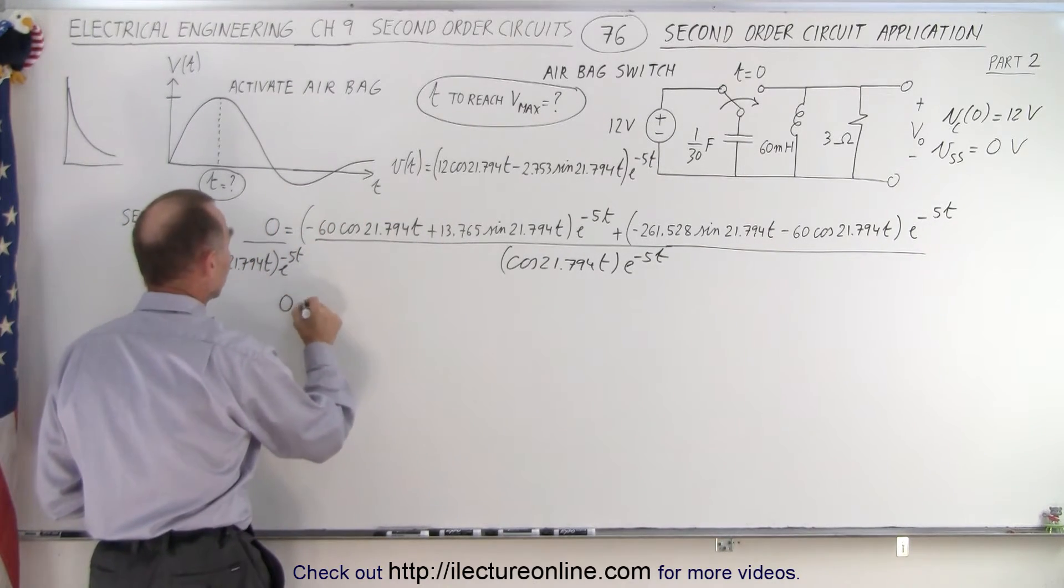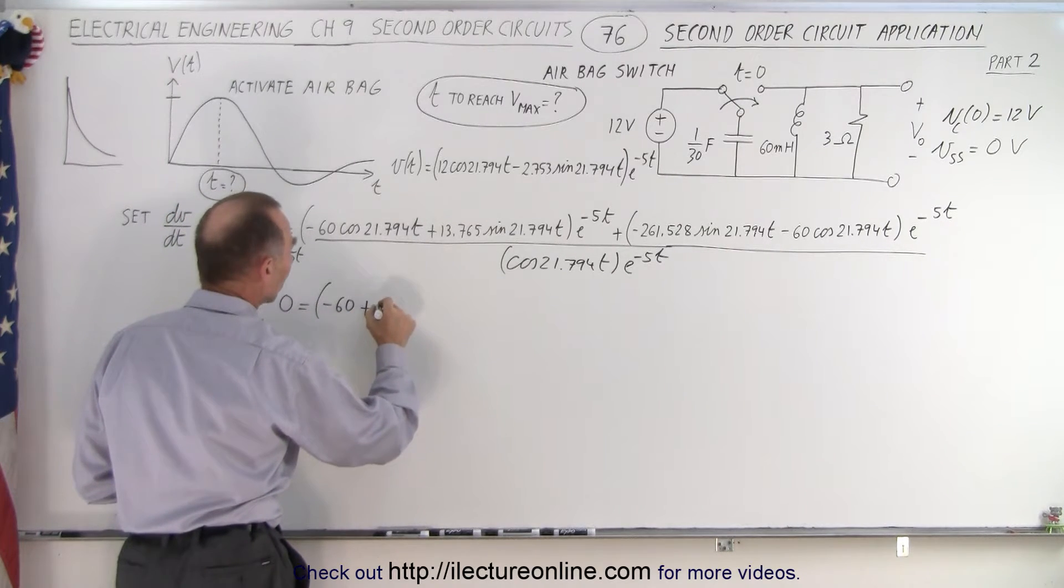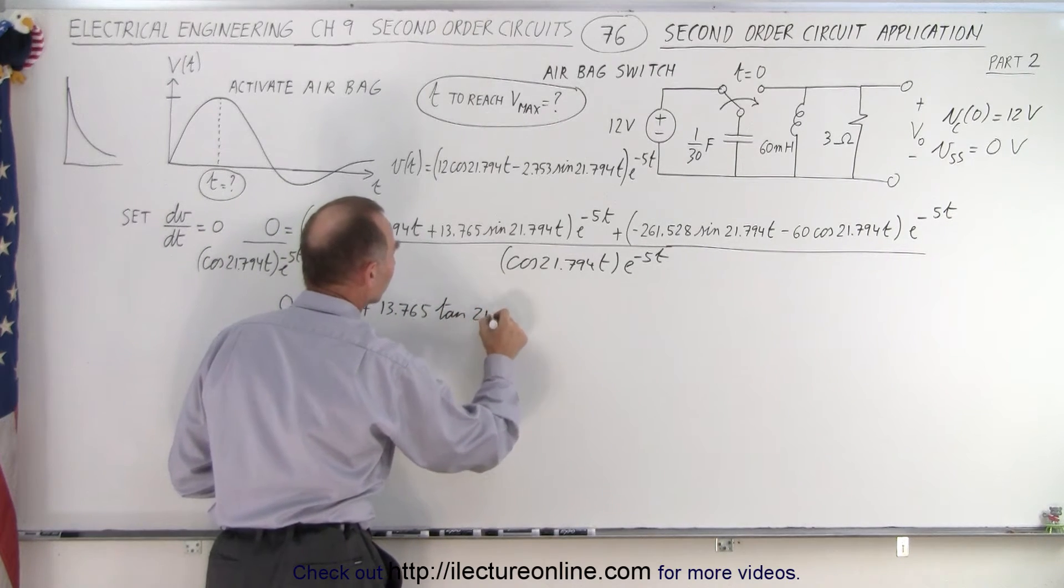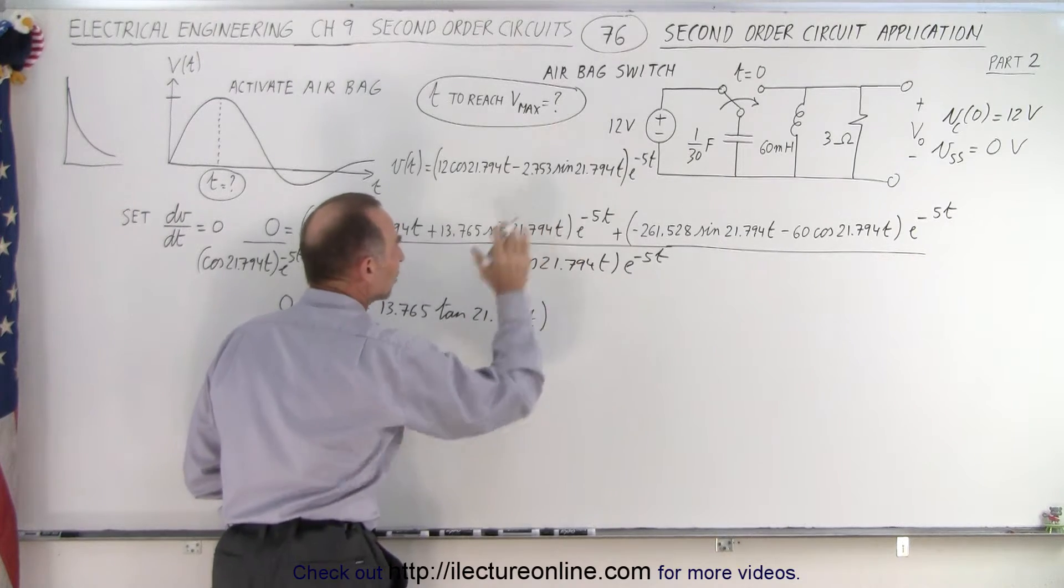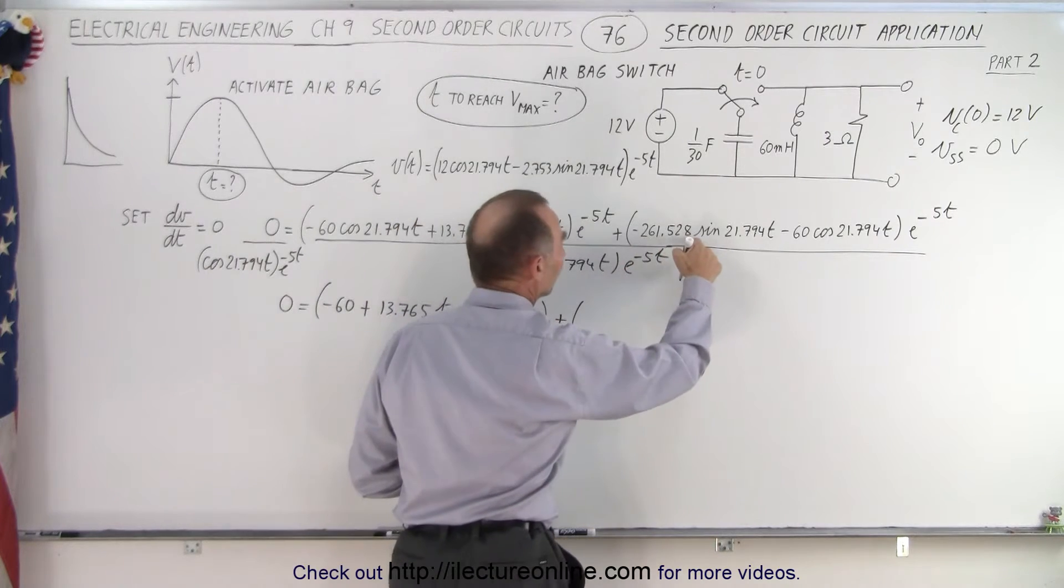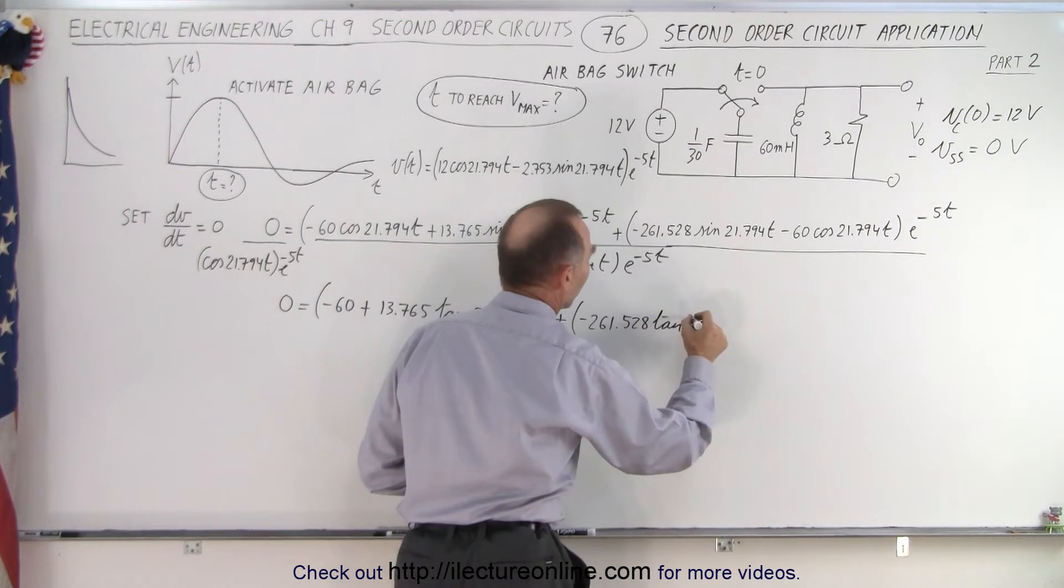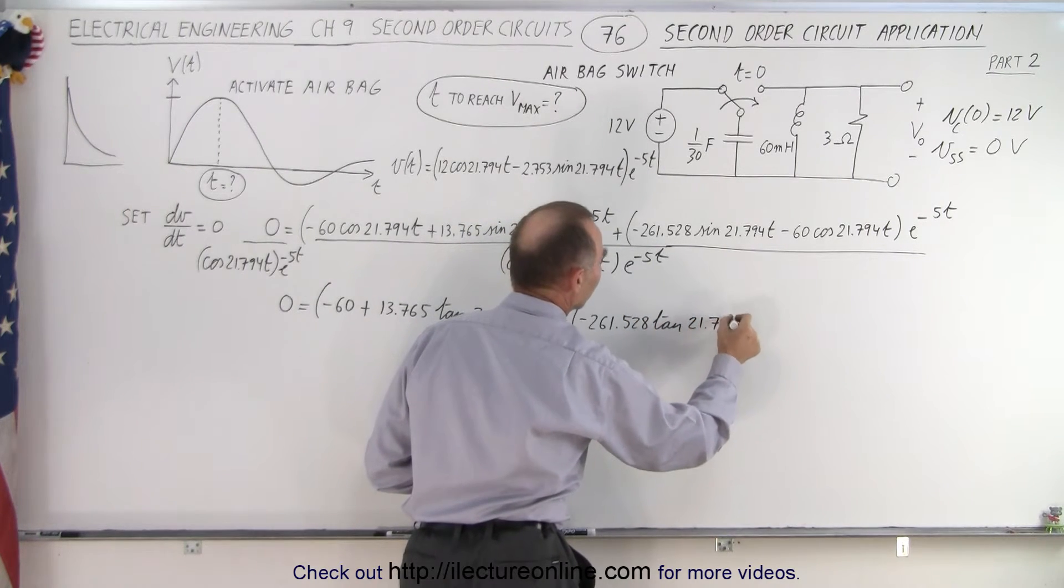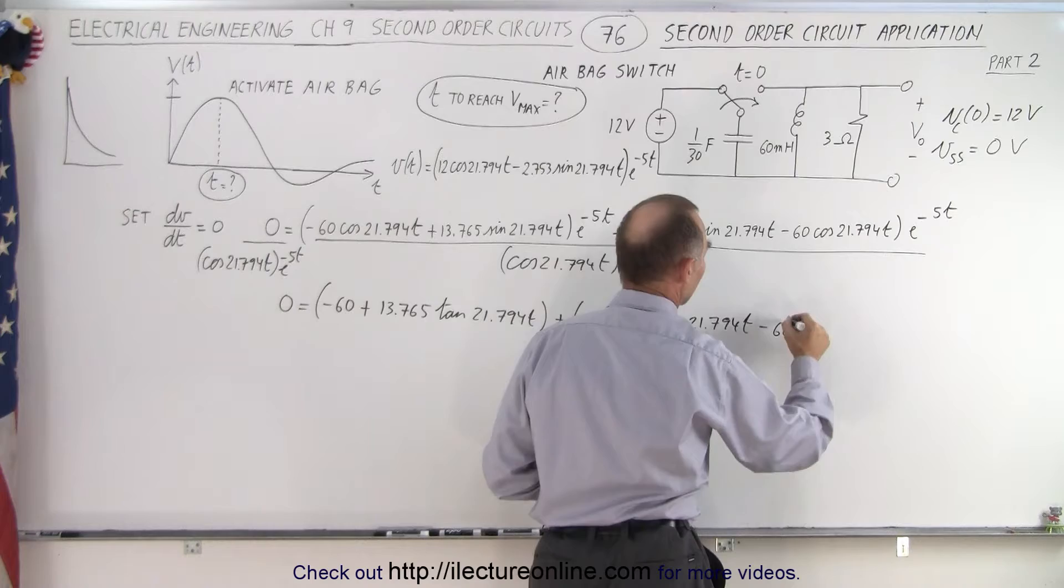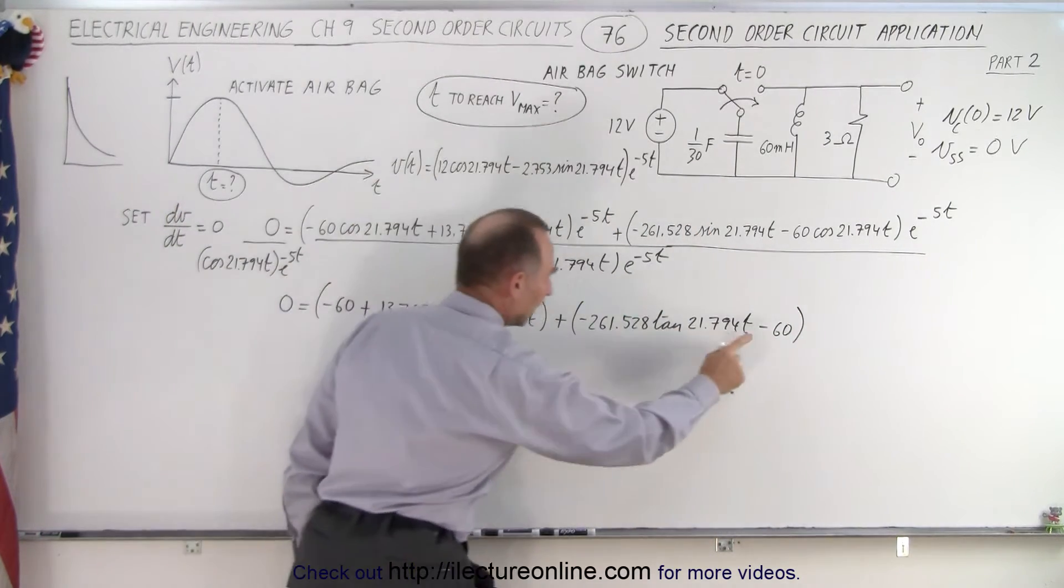So now that we've done that, let's see what that equation looks like. The left will still look like zero is equal to: this becomes minus 60 plus 13.765, this becomes the tangent of 21.794t. Of course e to the minus 5t drops out, and then over here we have plus, this becomes the tangent, so minus 261.528 times the tangent of 21.794t. And here the cosine again divided by cosine becomes 1, and we have minus 60.